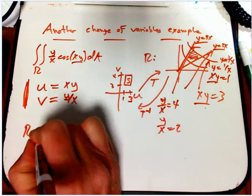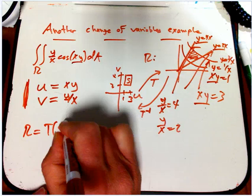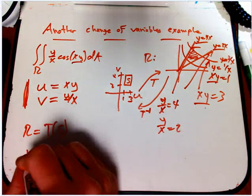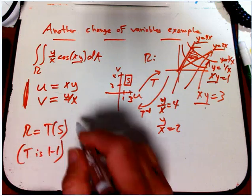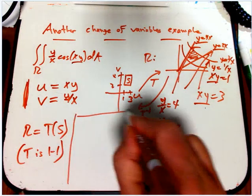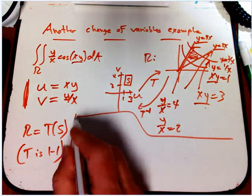So that's our S in this case. And so we have, yes, our interesting region is our transformation of our simple region. T is 1 to 1. Turns out, but I'm going to not worry about that too much. It's not too hard to see.